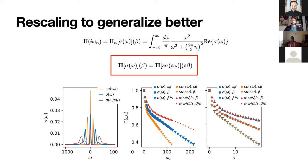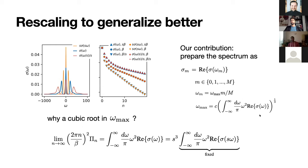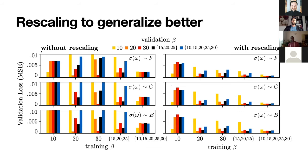So our contribution for this problem was we came up with a rescaling procedure. We explained how to prepare the spectrum to avoid that degeneracy. There are some details that go with this which I won't touch. When we compare the results without this rescaling and with this rescaling, we find that basically if you train on some temperature and you try to validate on other temperatures, you get always better results with the rescaling than without the rescaling. So it's a very important step towards getting these analytic continuations.